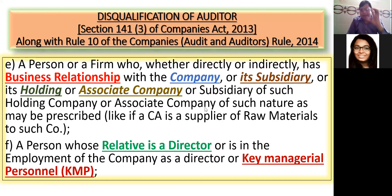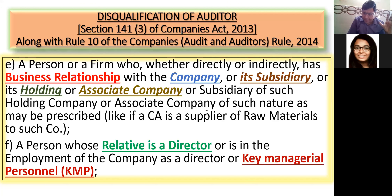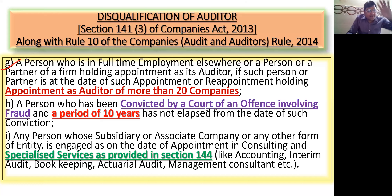अब यह भी हो गया — कोई भी अगर आपका relative है, अगर वो KMP या director है उस company के, तो भी आप disqualify हो जाओगे।